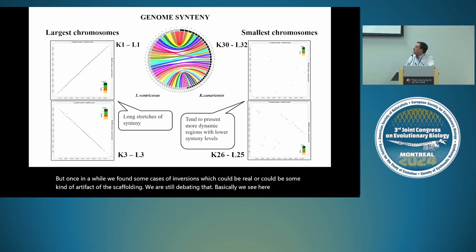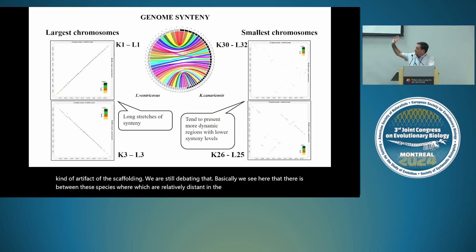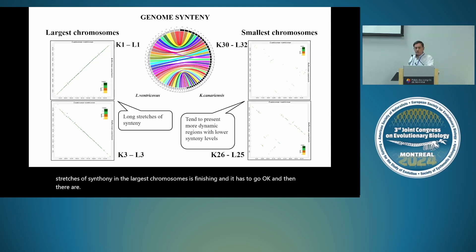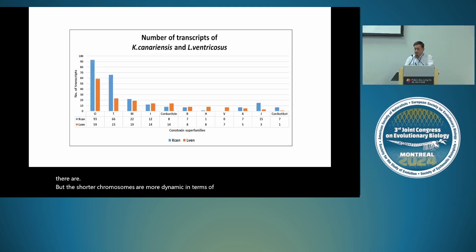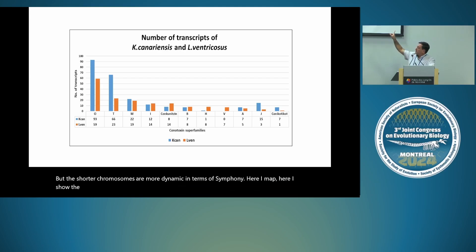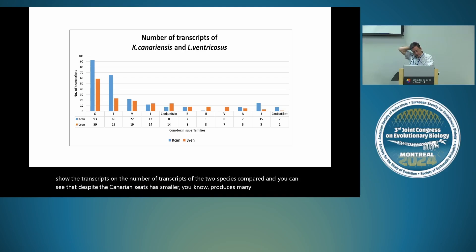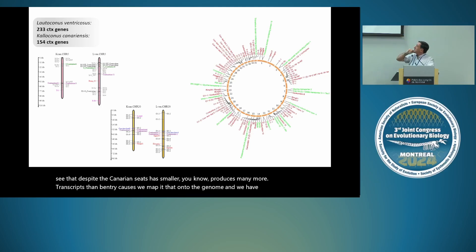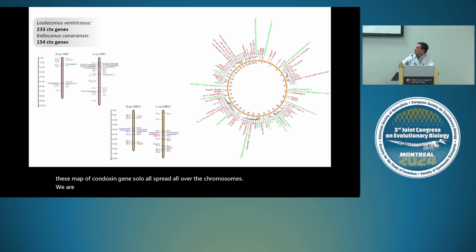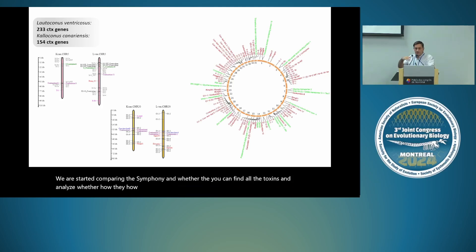The macrosynteny is maintained between these relatively distant species, with long stretches of synteny in the largest chromosomes. The shorter chromosomes are more dynamic. We mapped the transcriptomes and found conotoxin genes spread all over the chromosomes. We are now comparing the synteny and analyzing how conotoxin gene families are born and die. We already have a third genome, which will let us polarize whether there are expansions or contractions in conotoxin gene family evolution.